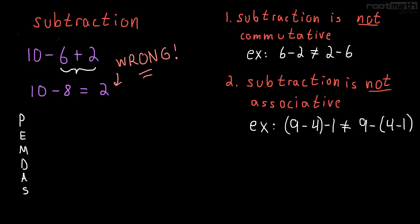What we forgot is that what the order of operations really says is when you have only subtraction and addition left, do everything from left to right. So this is really 10 minus 6, which is 4, plus 2, which is equal to 6. And that's the right answer.